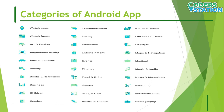AR apps — AR-driven image recognition, location-based, projection-based, and superimposition-of-object type apps come under this category. The next category is auto and vehicles — auto shopping, auto insurance, auto price comparison, road safety, and auto review and news apps come under this category.